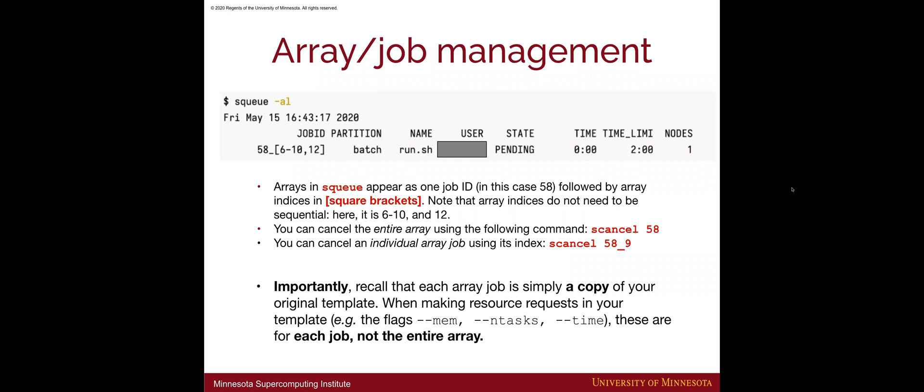One important thing to keep in mind: each array job is just a copy of your original template script. This means resource requests in your template — such as memory, number of tasks, and wall time — apply to each individual job, not to the entire array. Keep that in mind when creating your template script, because it can impact how long it takes for things to be submitted and run on SLURM.